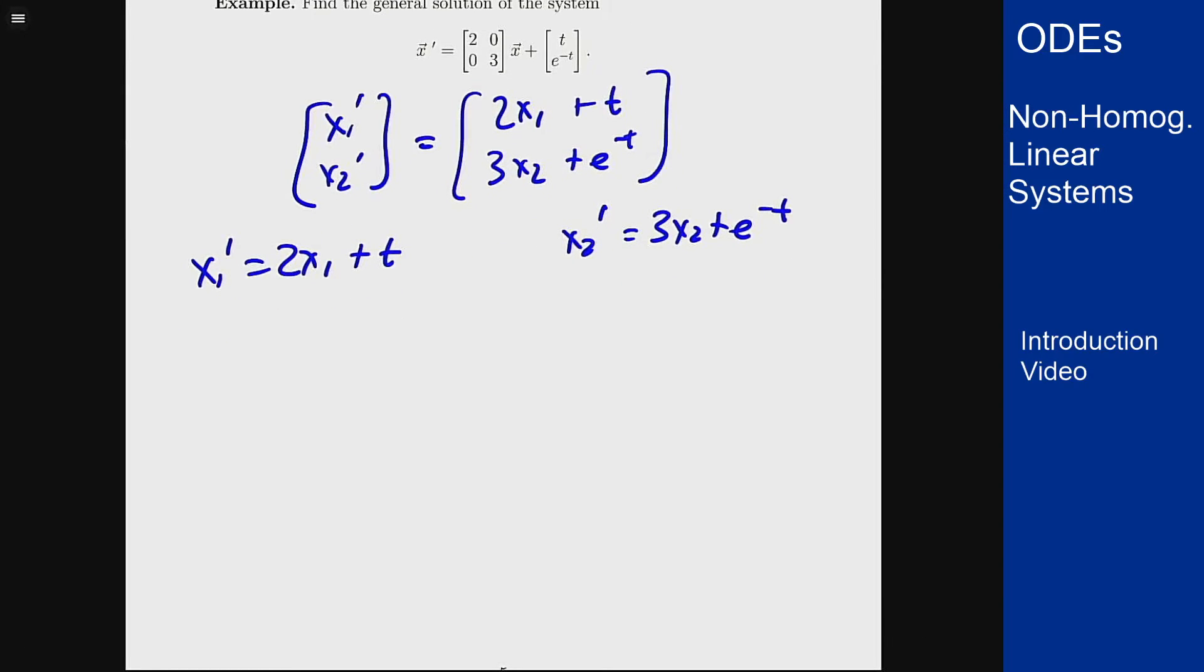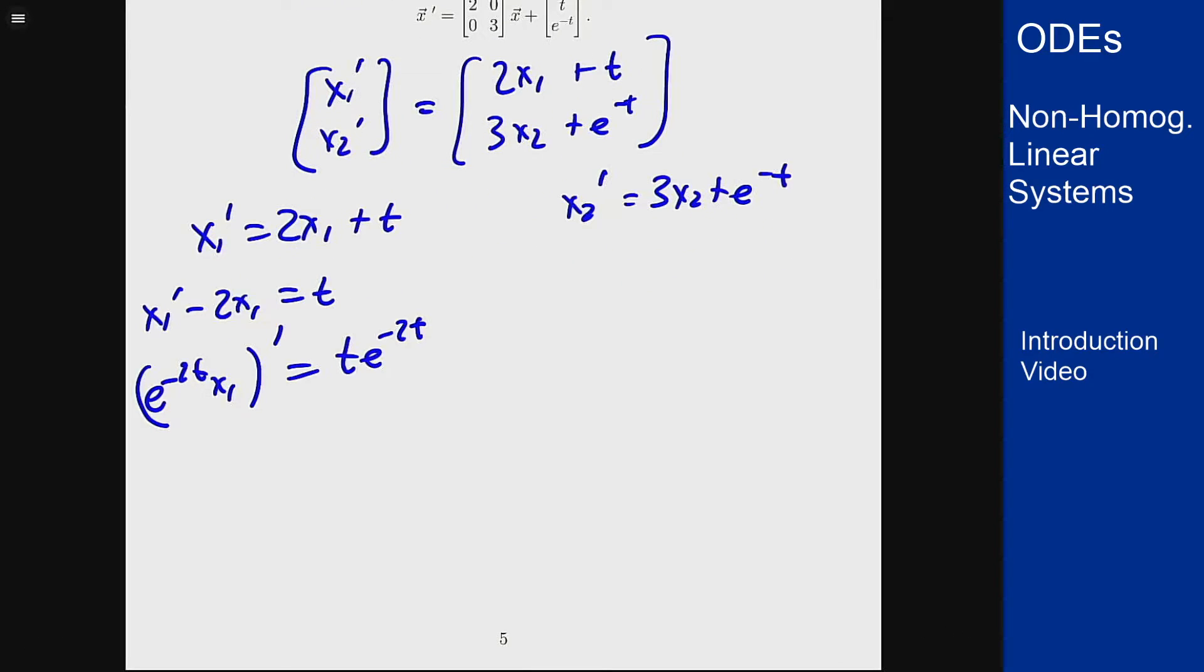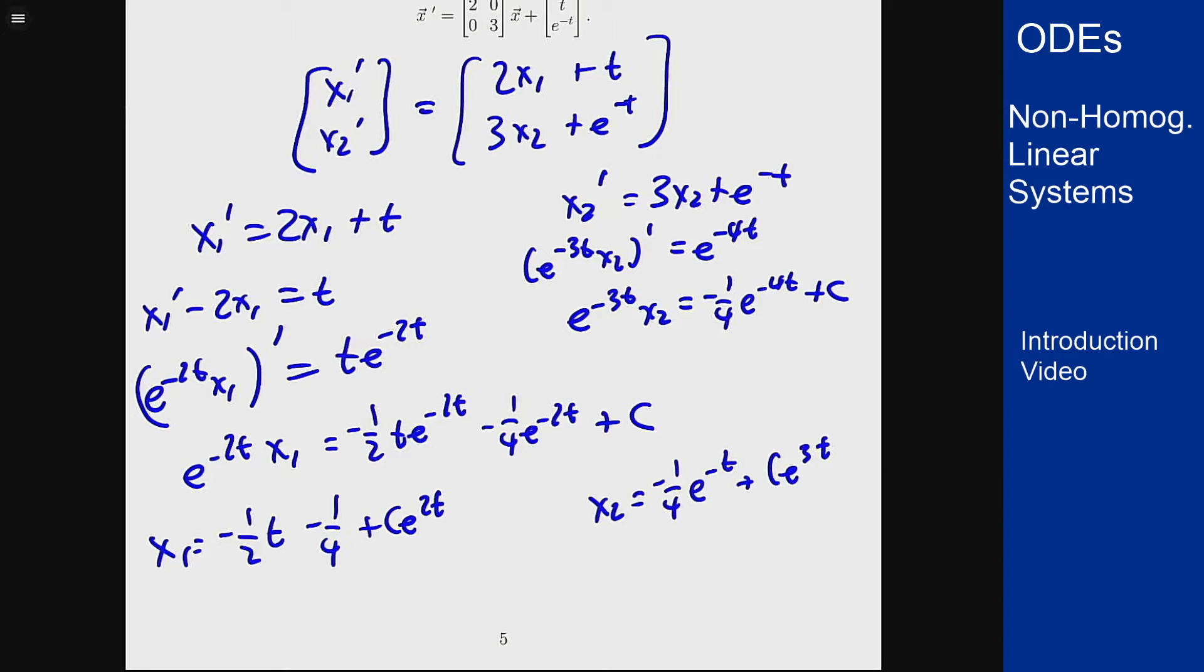For instance we do this by integrating factors. Integrating factor for the first side is e^(-2t). Then we can solve that for x₁. Do the same thing for x₂.